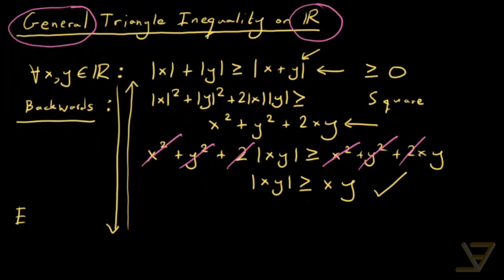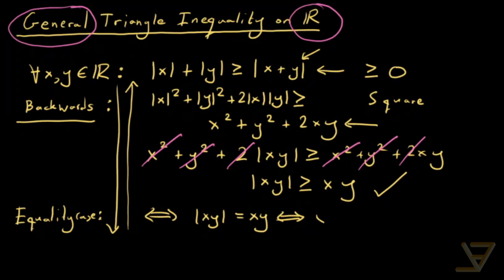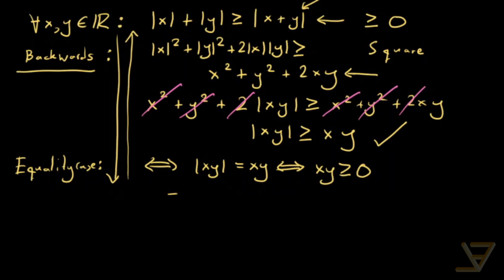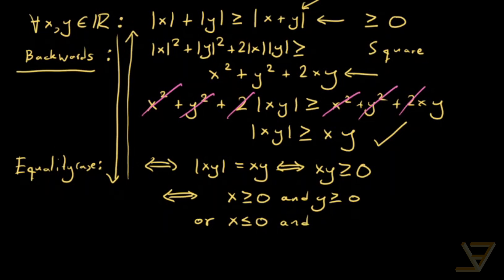Now comes the equality case. We can see that equality holds if and only if the absolute value of xy equals xy, and that's true if and only if xy is greater than or equal to zero. That in turn is true if and only if one of two things holds: x ≥ 0 and y ≥ 0, or x ≤ 0 and y ≤ 0. So as long as one of these cases is true, equality holds in the triangle inequality.